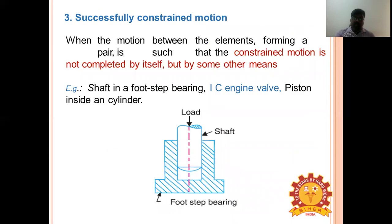In successfully constrained motion, the constrained motion is not completed by itself but by some other means. Examples include a shaft in a footstep bearing, IC engine valve, and piston inside a cylinder.